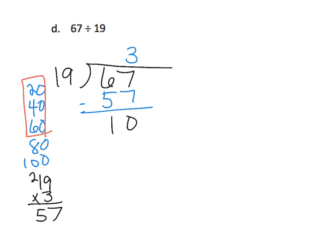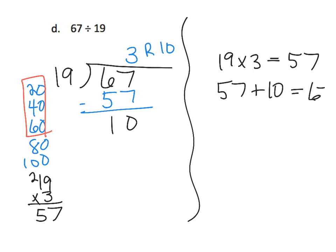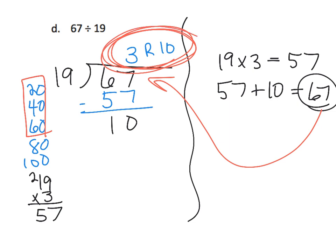Now, how do we check it? We go over here and check it. So we're going to do 19 times 3, which gives us 57. How do I know that? Because it says so over here. And then I'm going to take that 57 and I'm going to add in my remainder of 10, which gives me 67. And check that out, that's exactly what was inside the house. So that tells me that my quotient up here with the remainder is correct.